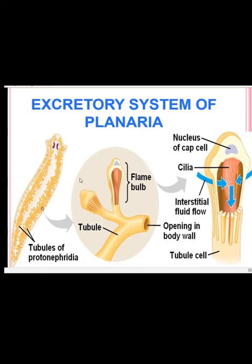These flame cells, or blind ends of these tubules, are bathed in interstitial fluid of planaria. The interstitial fluid will move inside these flame cells through the slits, and by the flickering of these cilia, they filter this interstitial fluid, which then moves towards the tubules. While traveling in these tubules, the essential substances are reabsorbed, while the nitrogenous excretory products are sent to the opening outside the body, which is known as nephridiopore.